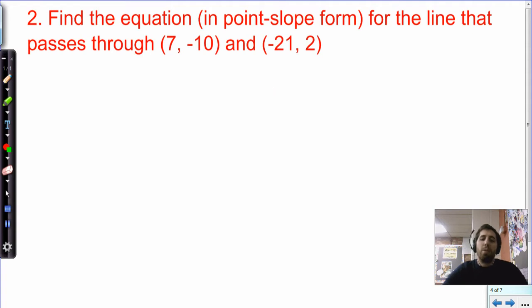This one says, find the equation in point-slope form for the line that passes through 7, negative 10, and negative 21, 2. So we are going to use our slope equation in this case. And you know that I like you to do this to be careful. I'm going to do the same. So we'll call this x1, y1. And this is the second point, and we know that the independent variable comes first, x is first.